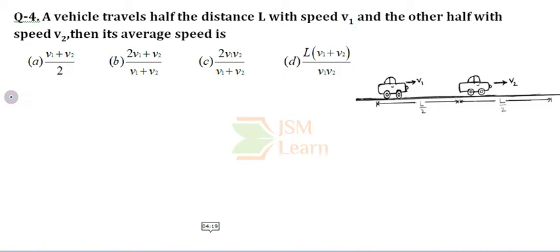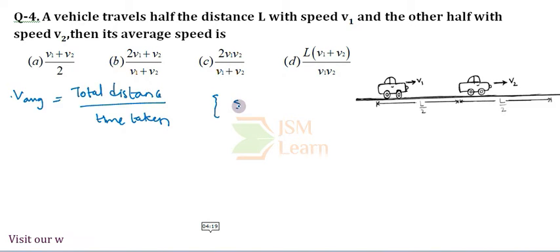Average speed, we can find that V average. We know that V average speed is equals to total distance by total time taken. So in question, they have already mentioned the total distance that is L. We don't know what the time taken is. So, we already know the relation between speed and distance.